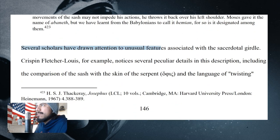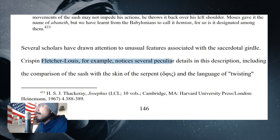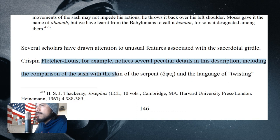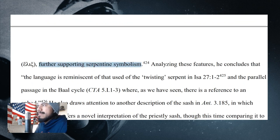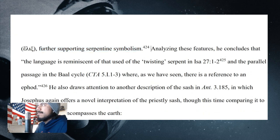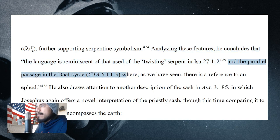Several scholars have drawn attention to the unusual features associated with the sacerdotal girdle. Fletcher Lewis, for example, notices several peculiar details in this description, including the comparison of the sash with the skin of the serpent and the language of twisting, further supporting serpentine symbolism. He concludes that the language is reminiscent of that used for the twisting serpent in Isaiah 27:1-2, and the parallel passage in the Baal cycle, where there is a reference to an ephod.